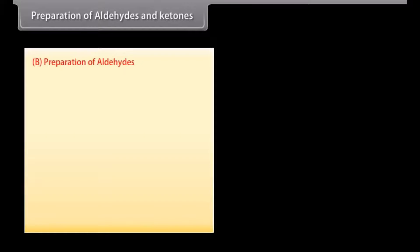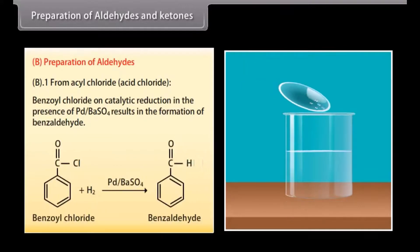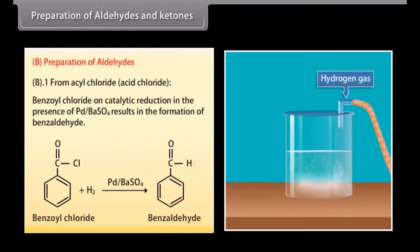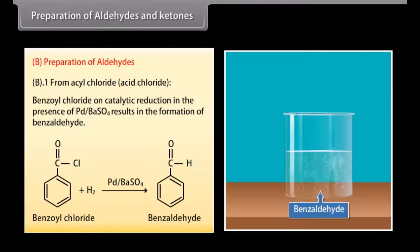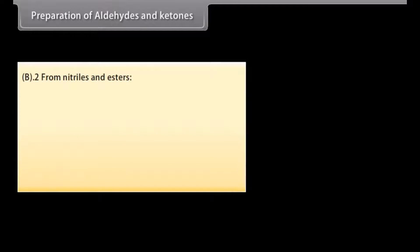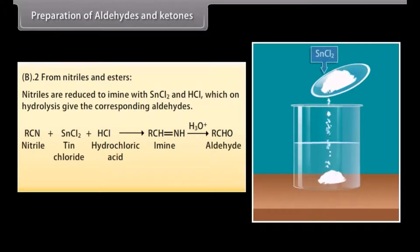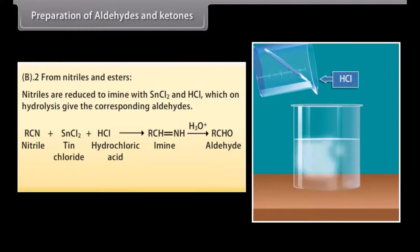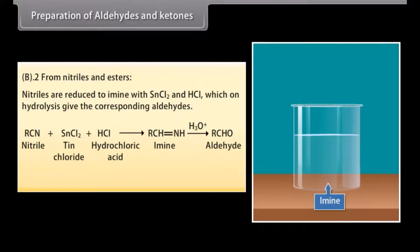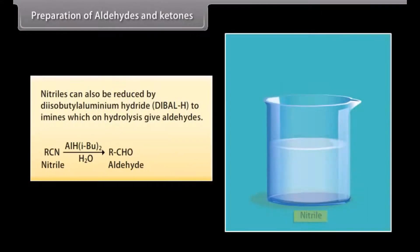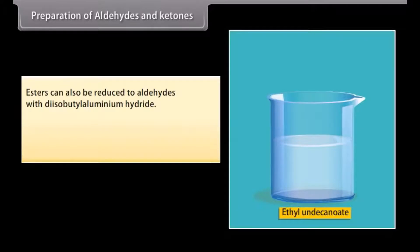Preparation of aldehydes from acyl chlorides (acid chlorides): benzoyl chloride on catalytic reduction in the presence of palladium on barium sulfate results in the formation of benzaldehyde. From nitriles and esters: nitriles are reduced to imines with tin(II) chloride and hydrochloric acid, which on hydrolysis give the corresponding aldehydes. This reaction is called the Stephen reaction. Nitriles can also be reduced by diisobutylaluminium hydride (DIBAL-H) to imines, which on hydrolysis give aldehydes. Esters can also be reduced to aldehydes with DIBAL-H.